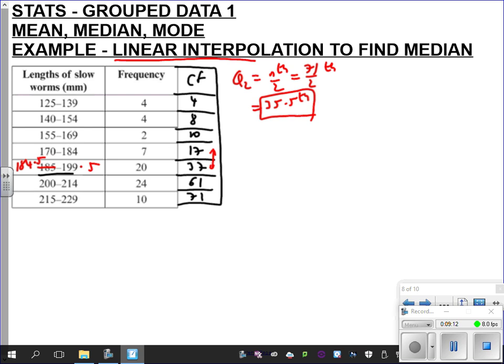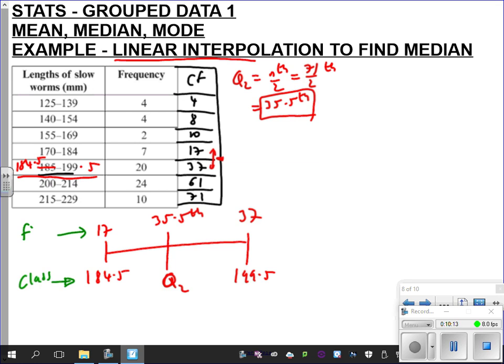So how does linear interpolation work? Well, essentially, if we draw a line like this. This is the method I'd like to use. You'll see kind of what's happening. We can see that this class, 184.5 to 199.5, it starts from frequency 17, doesn't it? And it ends at 37. Can you see? And somewhere, somewhere in there is the 35.5th value. And our class itself starts from 184.5 to 199.5. And this is what the Q2 is, isn't it? Remember, this is the value we're looking for. The specific millimeter of the slow worm. So on this line, can you see at the bottom, we've got our class information. And on the top, we've got our frequency information.